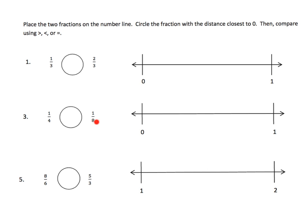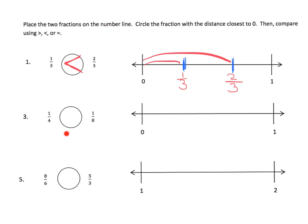We've got three problems. We're going to locate the fractions on the number line and then compare. Let's put these fractions on the number line — we have one-third and two-thirds. Here is our zero and our one, and because the denominators are three we're going to cut the interval into three parts. One-third goes right here, two-thirds goes right here. Two-thirds is longer than one-third, so one-third is less than two-thirds.